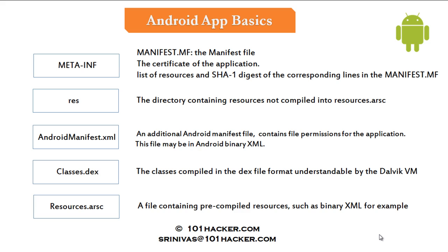The next one is android-manifest.xml file. This is the most important file for the user as well as an attacker. It contains the file permissions for the application. Every single Android app that we build may need some services and permissions from your device, so all those permissions should be included in android-manifest.xml. This file also contains the components used to build the app — it can be an activity, a service, or a broadcast receiver. Note that android-manifest.xml may be in Android binary XML format, meaning we may not be able to read its contents just by extracting it using WinRAR or 7-Zip. To view the contents, we have some other techniques we'll see in later videos.